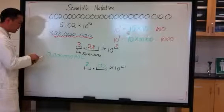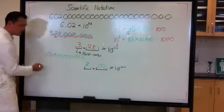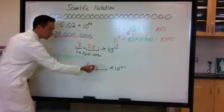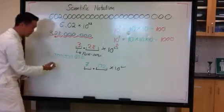Now, the decimal is currently located here. I want the decimal to be between the 7 and the 0. So how many jumps?